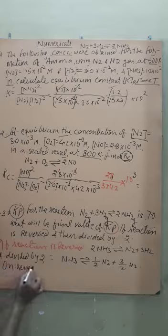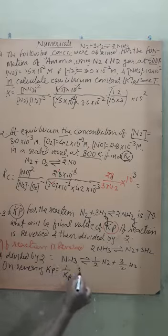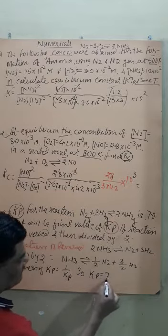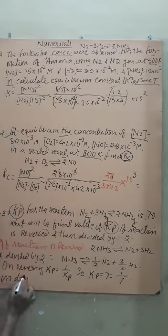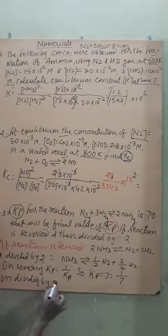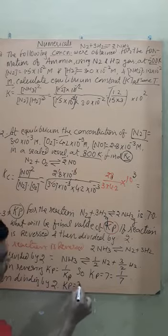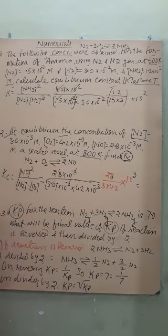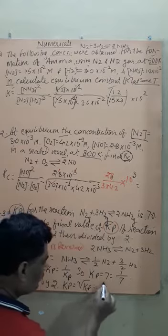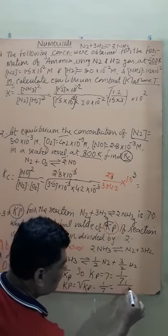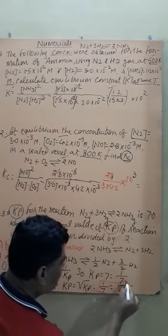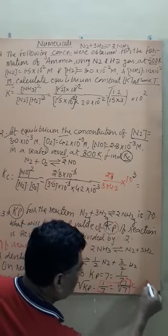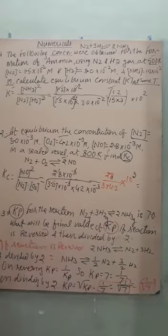On reversing, Kp becomes 1/Kp, so with Kp = 7, it becomes 1/7. On dividing by 2, Kp becomes the square root of the current Kp, which means √(1/7) = 1/√7. So the final value of Kp for the reversed and halved reaction is 1/√7.